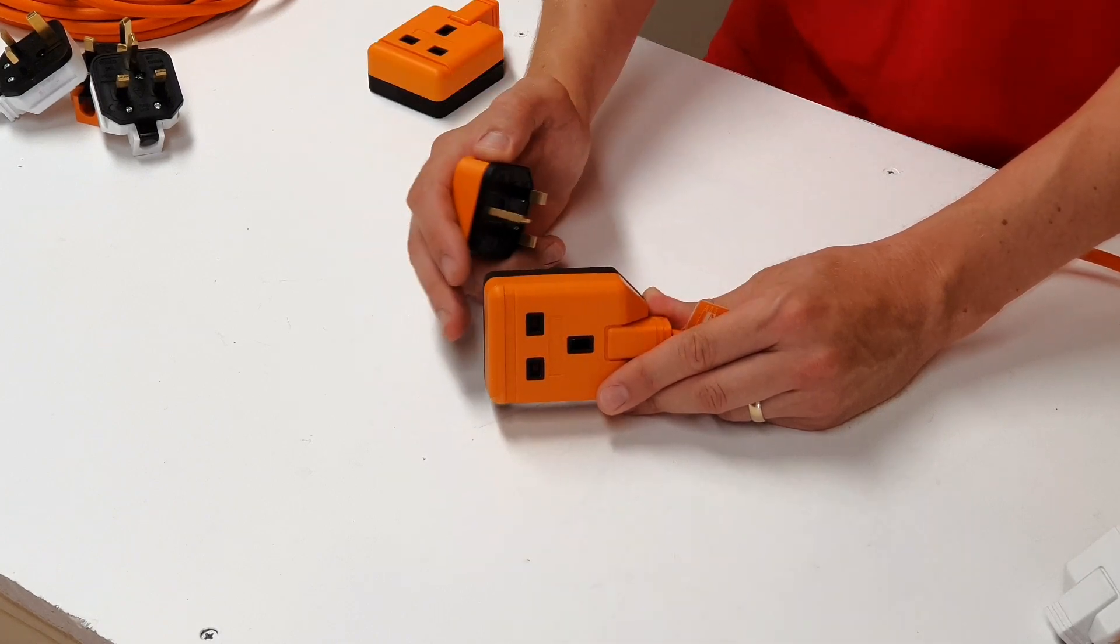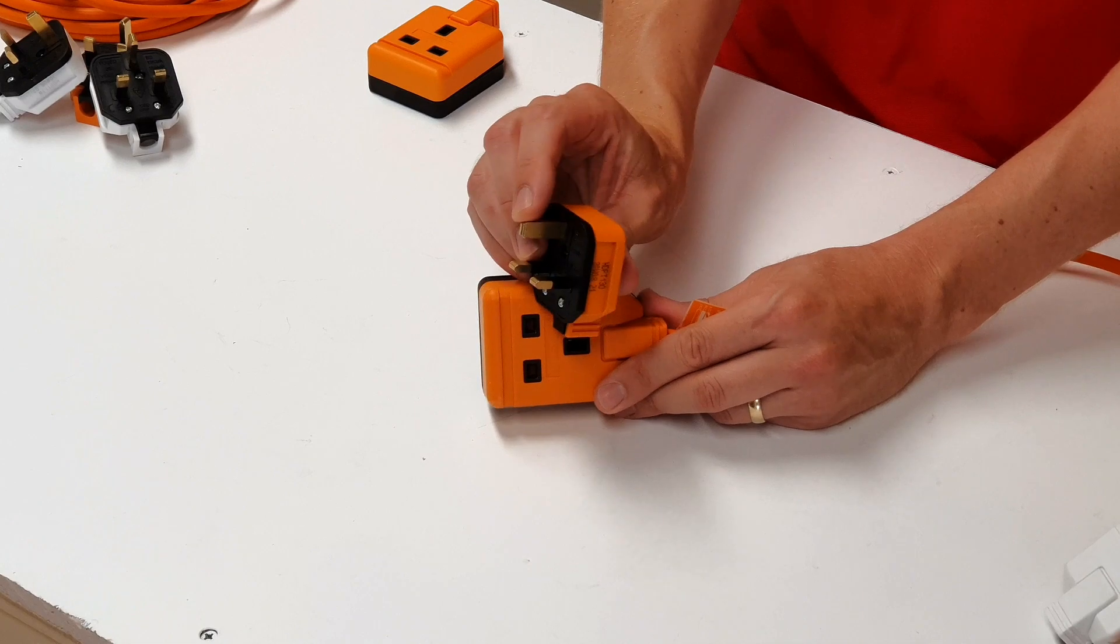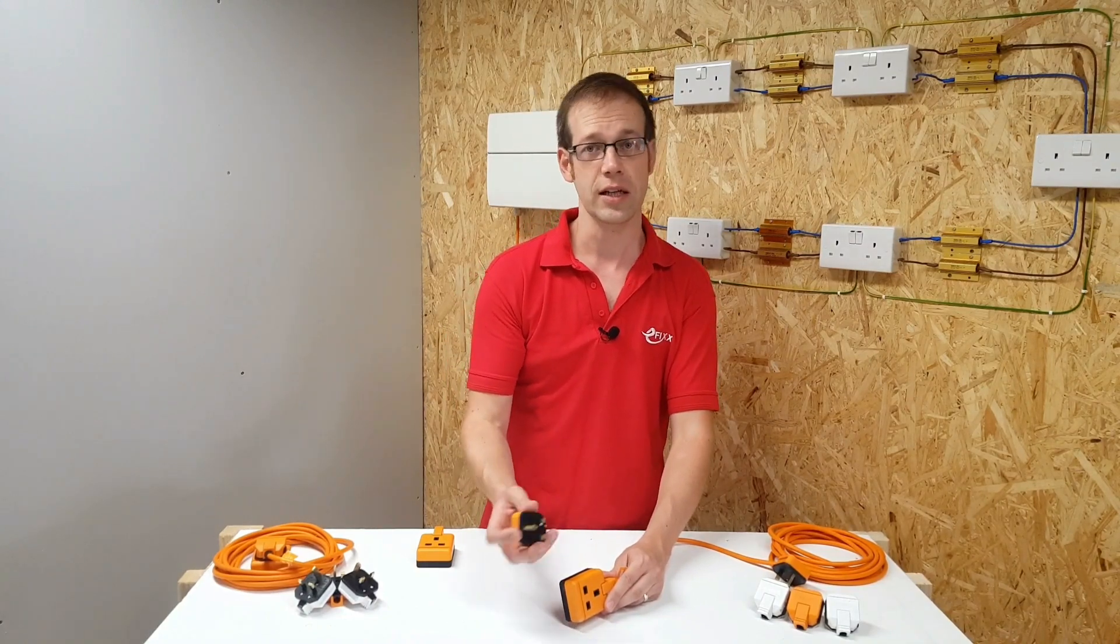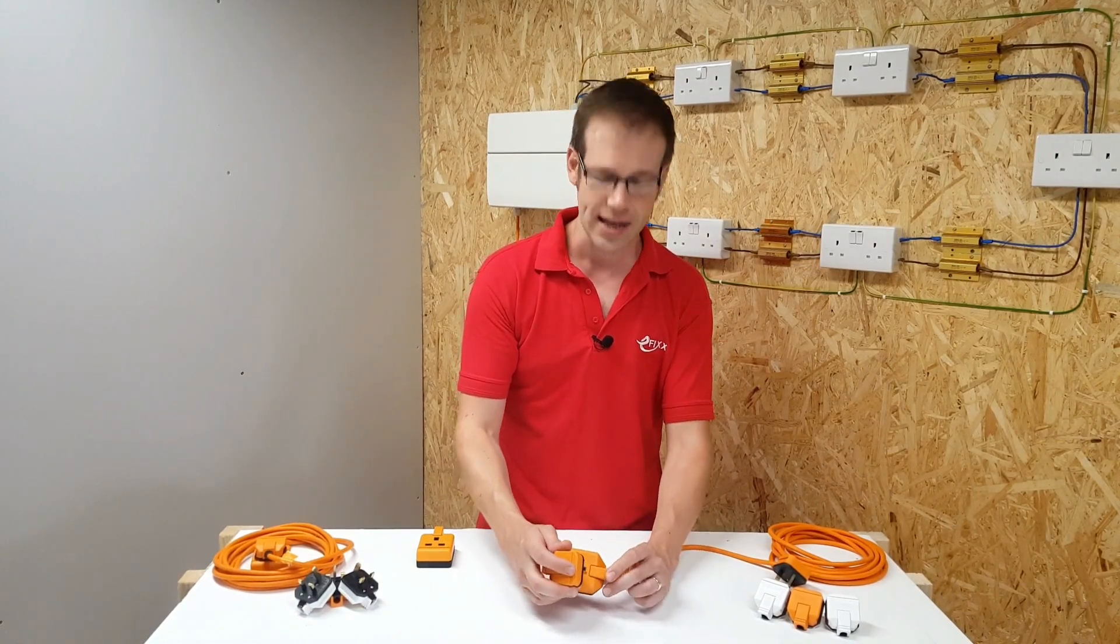But we still need to get past those shutters to connect our plug. So because the earth pin is a little bit longer than the live pins, it's used to open up those shutters and make contact. Now the writers of BS 1363 could have decided to use the line or neutral pin to do that. But their wisdom shines through because the safety connection gets made before the live connections, and that makes your appliance potentially more safe.